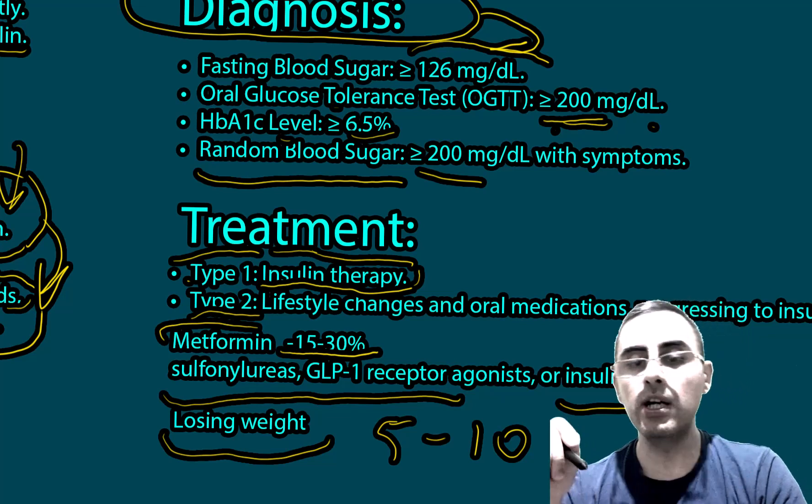Gestational diabetes is another type of diabetes — not Type 1 or Type 2 — which develops during pregnancy. It typically resolves after childbirth, but gestational diabetes can be a sign of insulin resistance and may eventually develop into Type 2 diabetes, which is why it still requires attention.